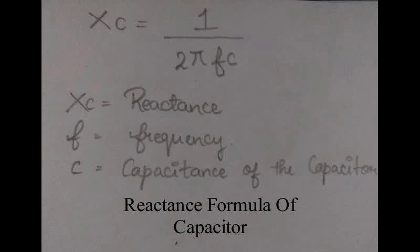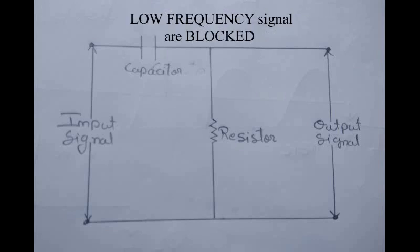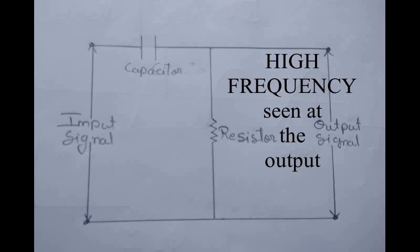The reactance provided by the capacitor changes in accordance with the frequency of the signal. In a high pass filter, the high frequency signal will be passed through the capacitor while the low frequency signal will be blocked by the capacitor as the reactance formula says. As the high frequency signal crosses the capacitor, it can be seen across the resistor and across the output terminals.